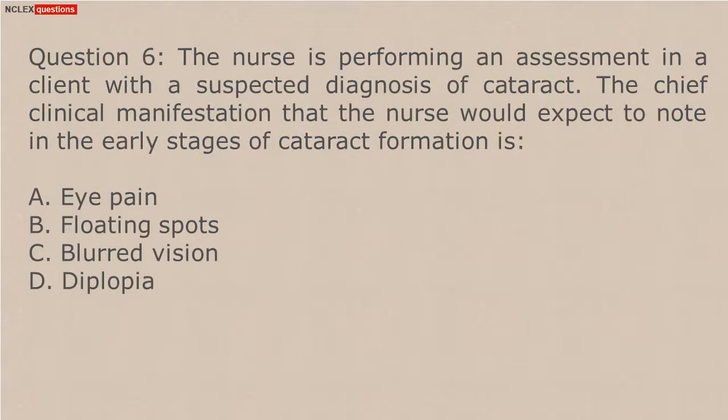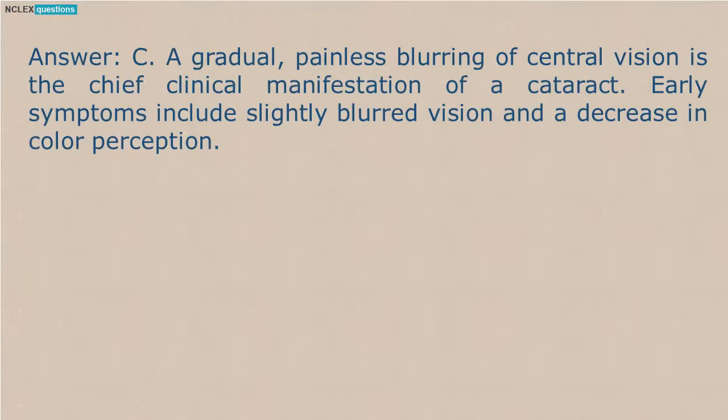Question 6. The nurse is performing an assessment on a client with a suspected diagnosis of cataract. The chief clinical manifestation that the nurse would expect to note in the early stages of cataract formation is: A. Eye pain. B. Floating spots. C. Blurred vision. D. Diplopia. Answer: C. A gradual, painless blurring of central vision is the chief clinical manifestation of a cataract. Early symptoms include slightly blurred vision and a decrease in color perception.